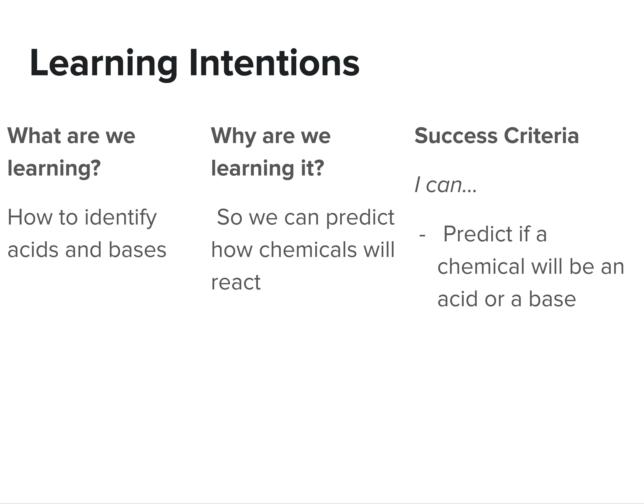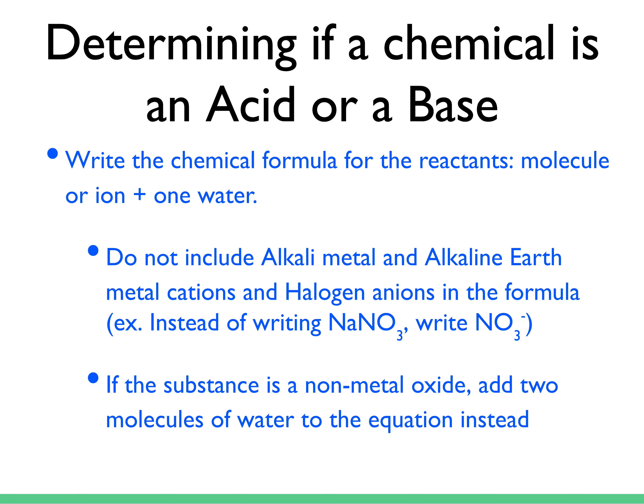Today we're learning an algorithm for identifying acids and bases. We're doing this so we can predict how different chemicals will react with each other, and our success criteria is being able to predict if a chemical will be an acid or a base.